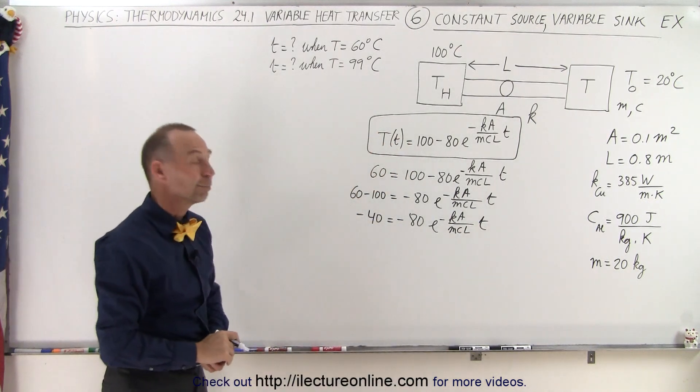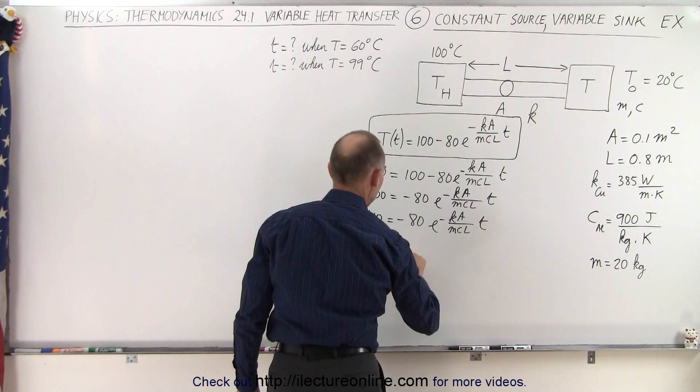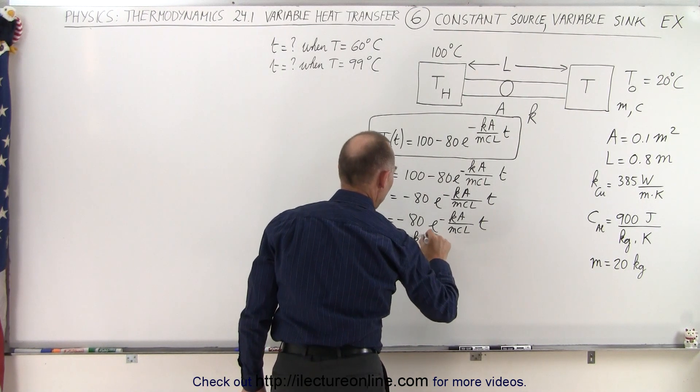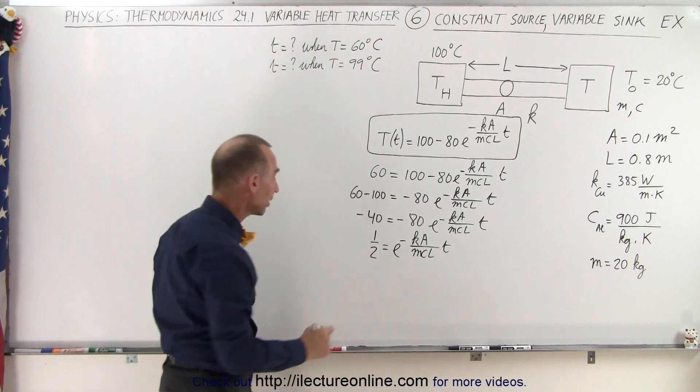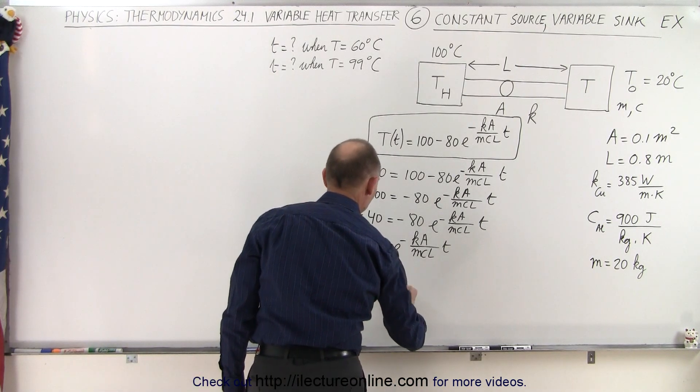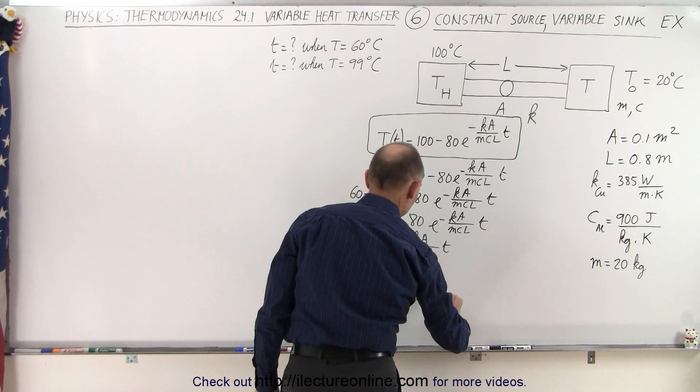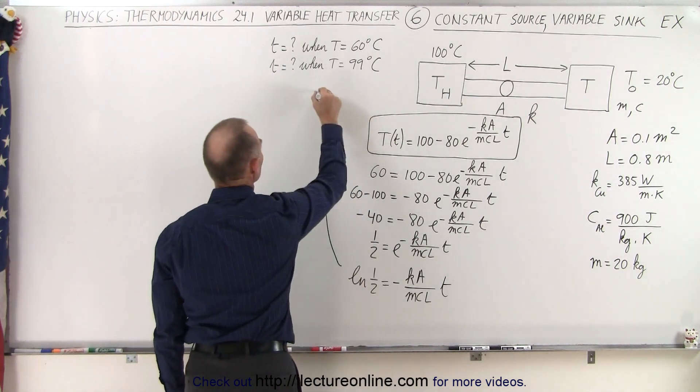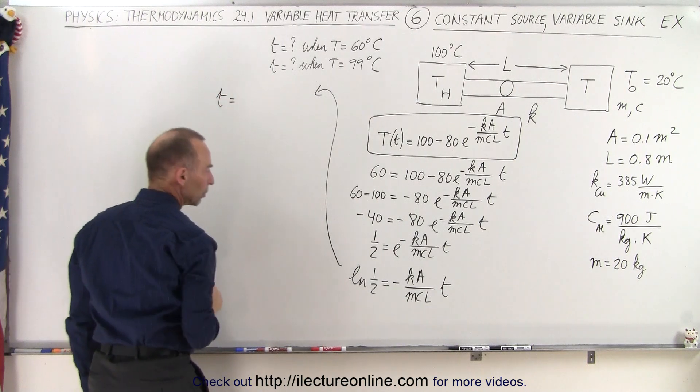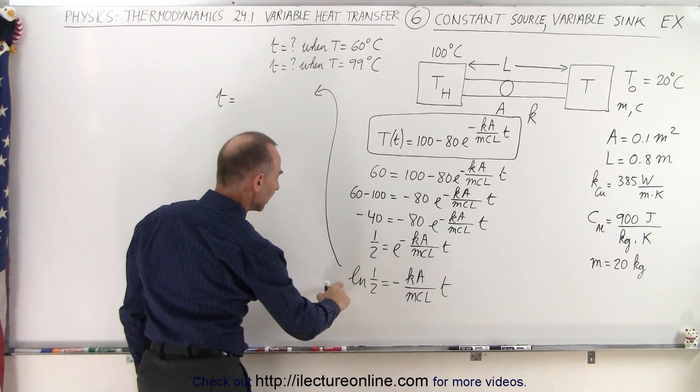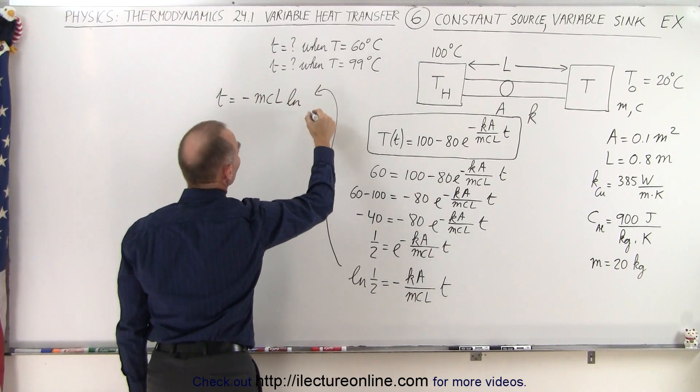And now we can divide both sides of the equation by negative 80 which means we end up with one half equals E to the minus KA over MCL times T. And now we take the natural log of both sides so we end up with the natural log of one half equals the natural log of this which is minus KA over MCL times T. And finally I can solve that for the time.